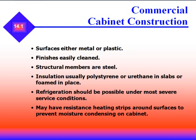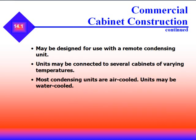These cabinets are usually constructed of either metal or plastic. Finishes are easily cleaned, and structural members are steel. Insulation is usually polystyrene or urethane in slabs or formed in place. Refrigeration should be possible even under the most severe service conditions. It may have resistance heating strips around surfaces to prevent moisture condensing on the cabinets. Most condensing units are air-cooled, though units may also be water-cooled.